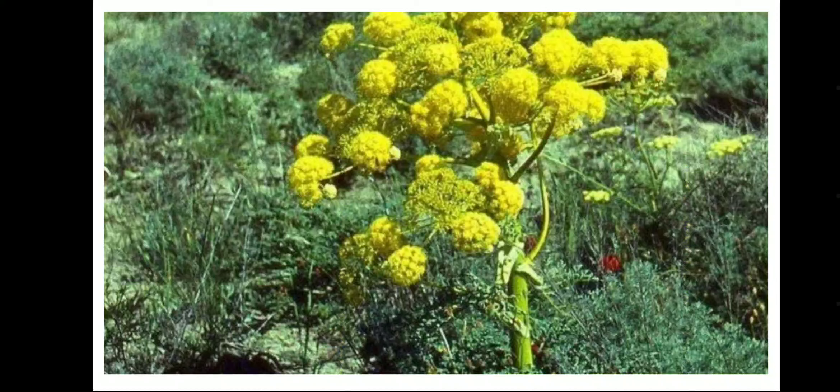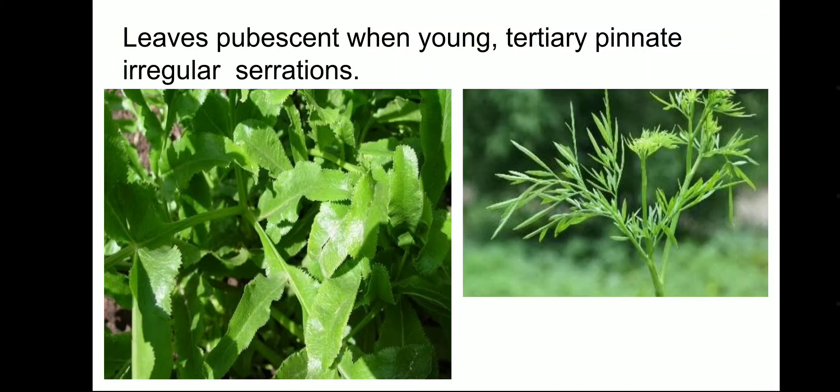In a closer view of the same picture, you can appreciate the compound umbellate inflorescence of the flower. The stem is cylindrical in shape and leaves are pubescent when young. Tertiary pinnate irregular serrations are present when it matures. Both the pubescent leaf and the tertiary pinnate irregularly serrated leaf are visible — the tertiary pinnate leaf is needle-like.